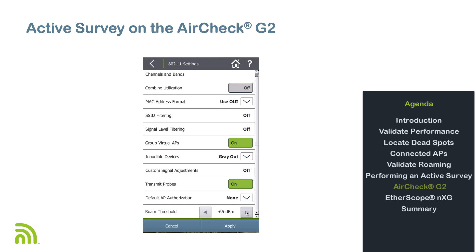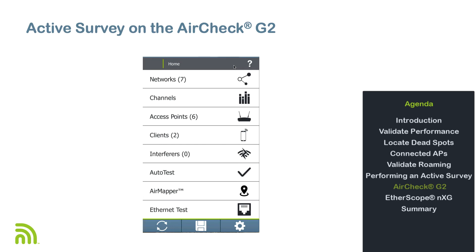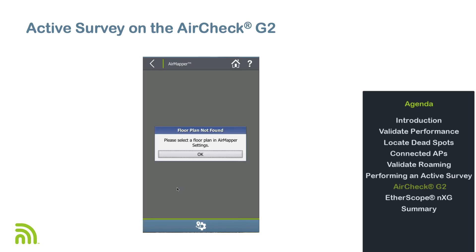After making changes, tap the Apply button and then the Home button at the top of the screen. Next, go into AirMapper. A message box appears asking you to select a floor plan. In this case, we're going to be loading our floor plan from a USB thumb drive.